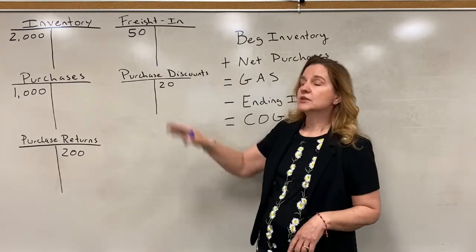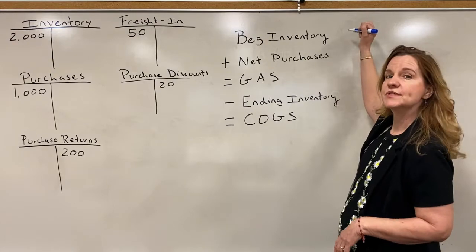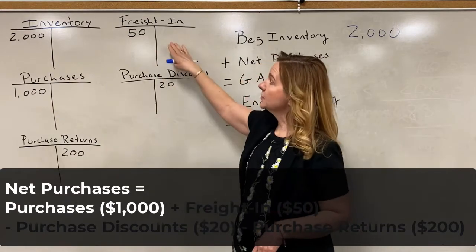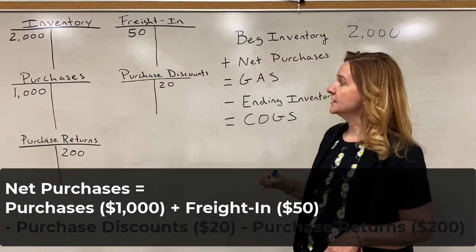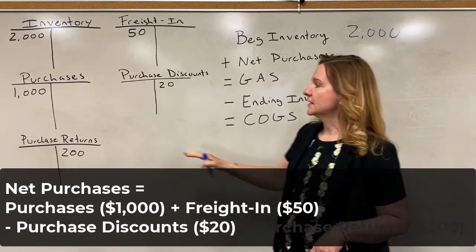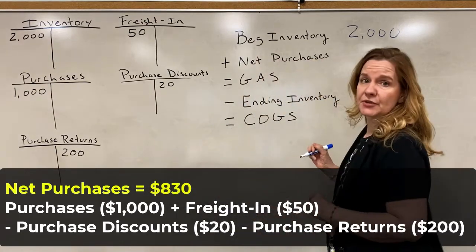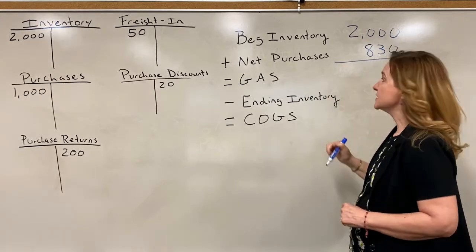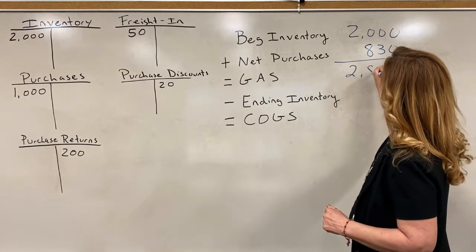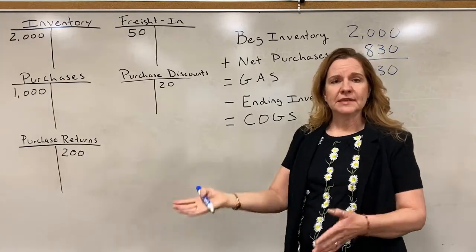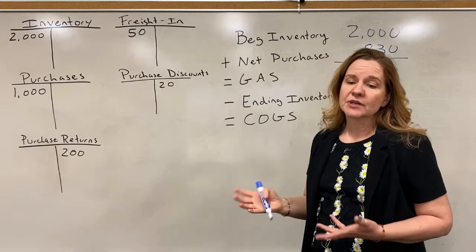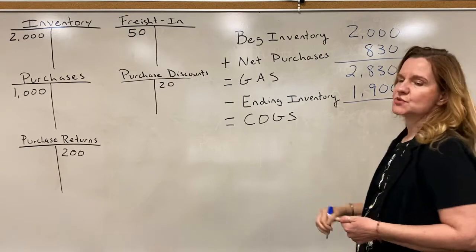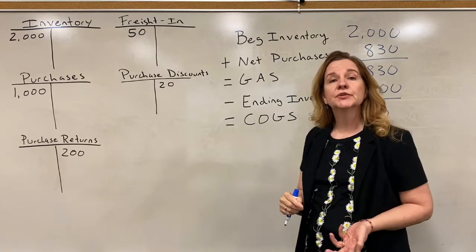From our general ledger, we have beginning inventory of $2,000. Net purchases is the $1,000 purchases plus $50 freight in, less $20 for discounts and less $200 for returns, which equals $830. Adding those two together gives us goods available for sale of $2,830. The ending inventory from the count is $1,900, and subtracting that gives us cost of goods sold of $930.